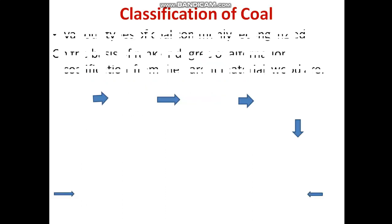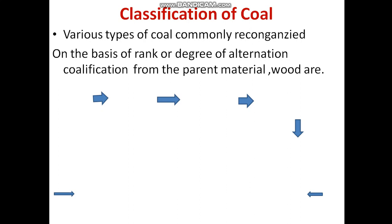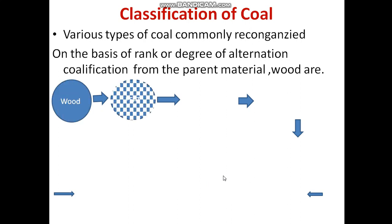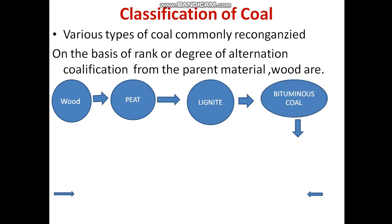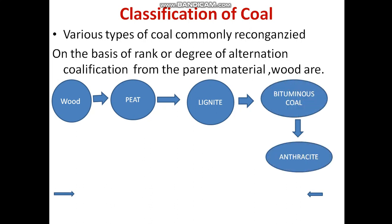Classification of coal: when wood undergoes coalification, it is converted into peat, lignite, bituminous coal, and anthracite. As we see here, wood is converted into peat, then lignite, then bituminous, and then anthracite.